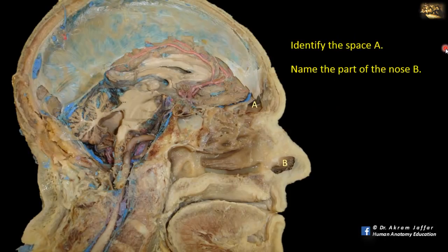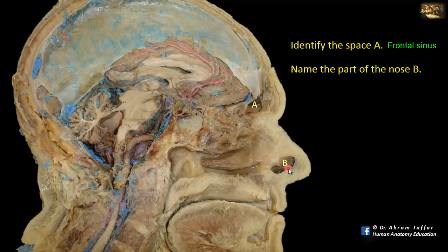Identify the space A and name the part of the nose B. This is a mid-sagittal section of the head, and the space in the frontal bone is the frontal sinus. The part of the nose B is the most anterior part — it contains hairs because it is lined with skin. It is called the vestibule of the nose, and these hairs are called vibrissae.